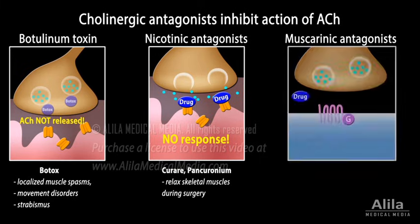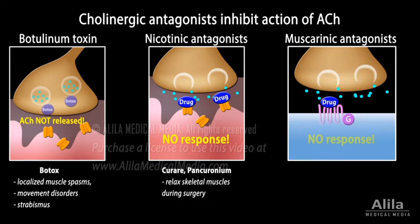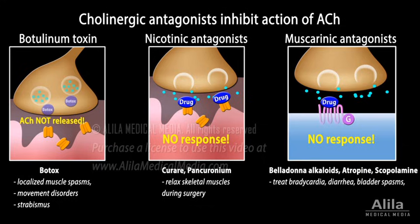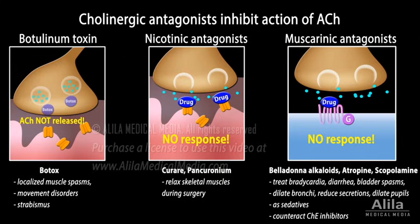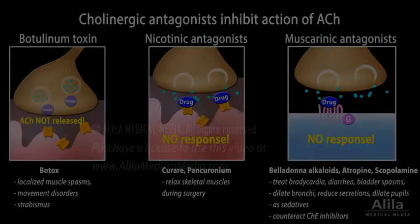Muscarinic antagonists compete with acetylcholine for binding to the muscarinic receptor. They are used to treat bradycardia, diarrhea and bladder spasms, dilate bronchi, reduce secretions, and dilate pupils. Some are also used as sedatives and to counteract cholinesterase inhibitors.